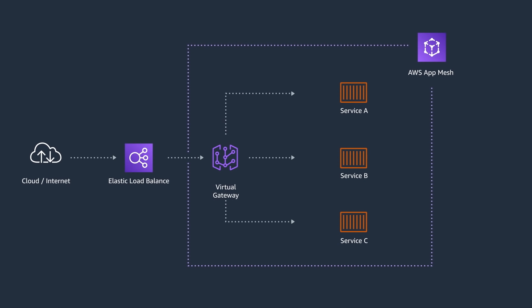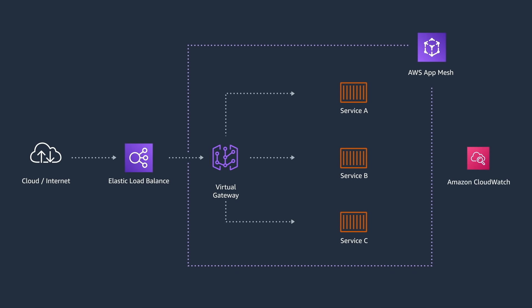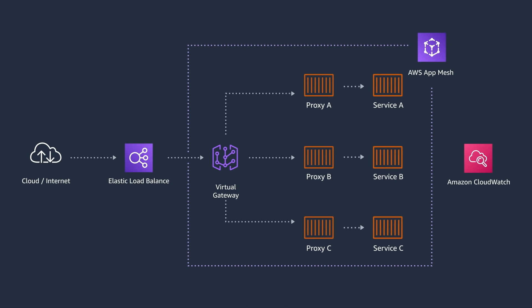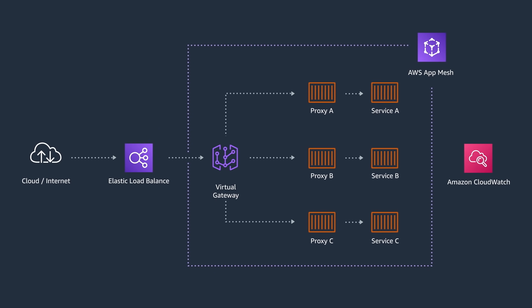AWS has a service for this called AWS App Mesh. AWS App Mesh is a service that helps you to configure, control, and monitor your services without making any code changes. AWS App Mesh configures your services so you can export monitoring data, metrics, and logs into CloudWatch. It highly simplifies your visibility and communications. In this pattern, every member of your service has a proxy that, in the case of AWS App Mesh, is an open source tool called Envoy. This proxy abstracts the network communication for your services.